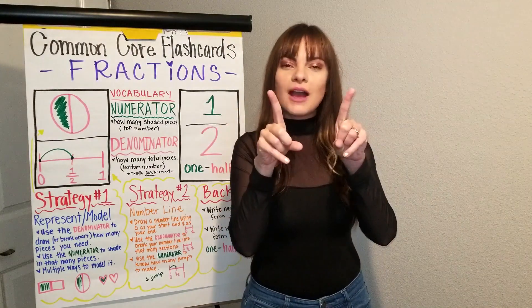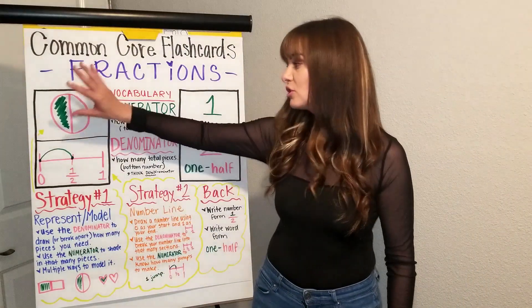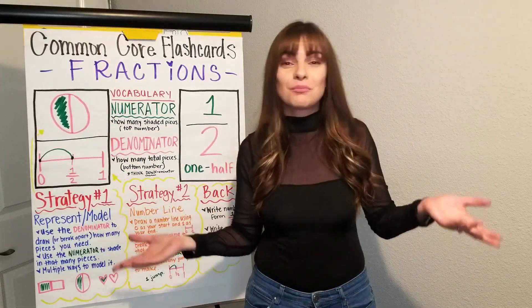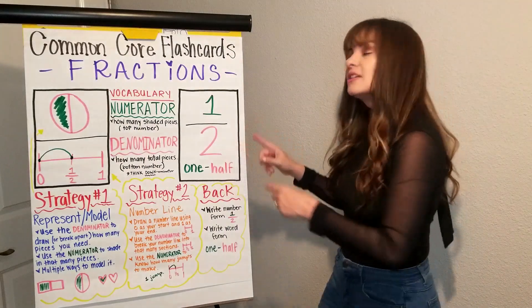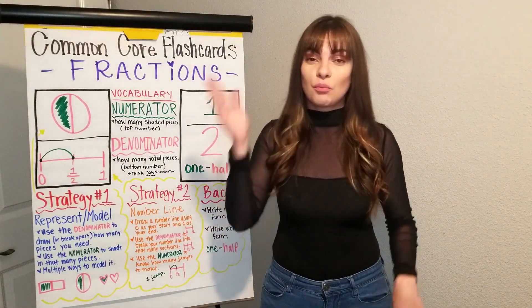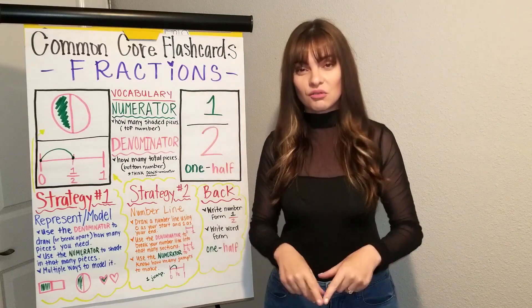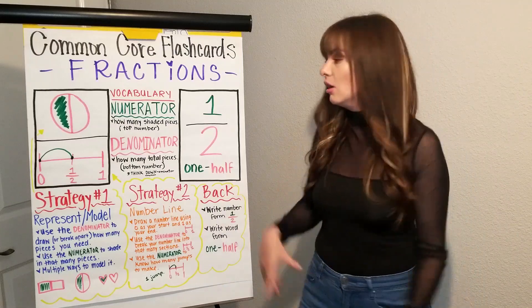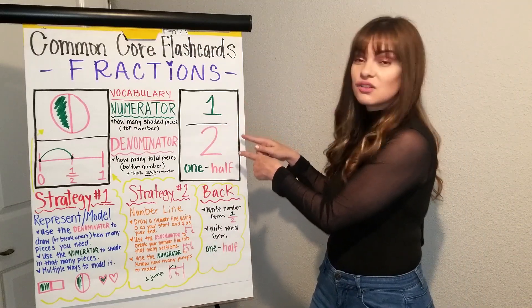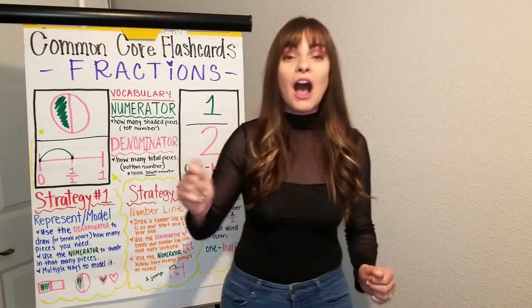So we have two strategies for our flashcards today. We have represent it and model it. On the top of your flashcard, I want you to split it in half, and on the top I want you to represent it — draw it, model it. Step one is you use the denominator to tell you how many pieces you draw, or how much you break apart a number line or an object into. It could be a rectangle, a circle, or hearts. You need to know that you're starting with a total of two pieces — that's what the bottom number is telling us. The second step is you're going to use your numerator to tell you how many to shade.